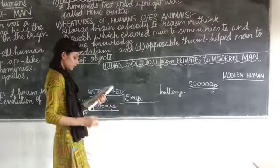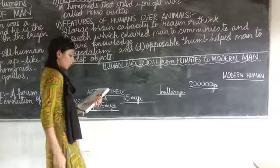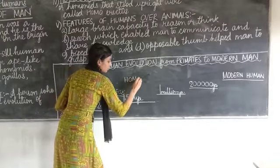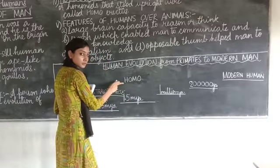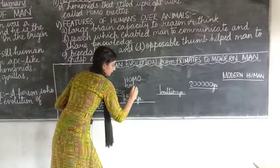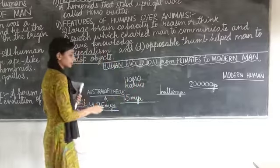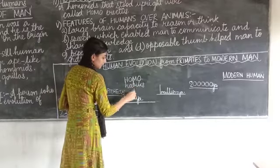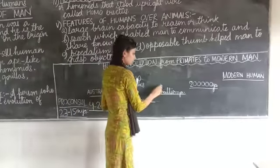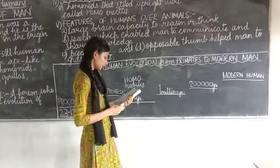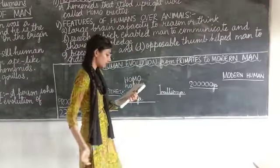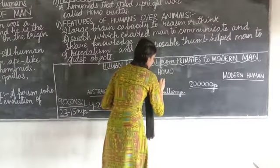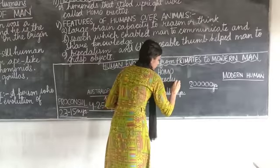1.5 million years ago were Homo habilis. Homo is written H-O-M-O with a capital H — that is the genus name. Habilis is written H-A-B-I-L-I-S in small letters — that is the species name, starting with a small h. Then 1 million years ago we were Homo erectus.